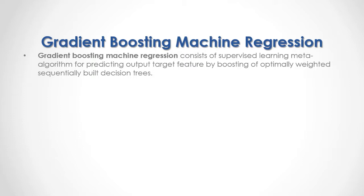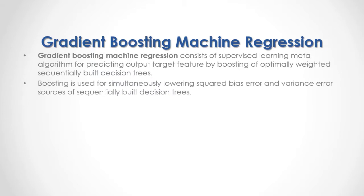Gradient Boosting Machine Regression consists of a supervised learning meta-algorithm for predicting an output target feature by boosting of optimally weighted, sequentially built decision trees. Boosting is used for simultaneously lowering squared bias error and variance error sources of sequentially built decision trees.